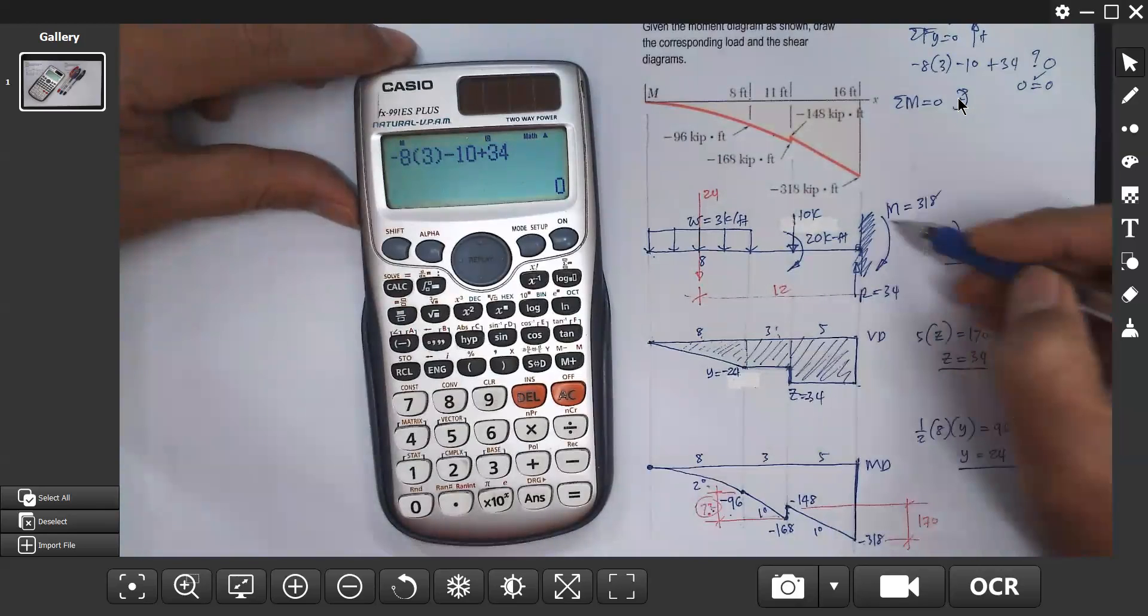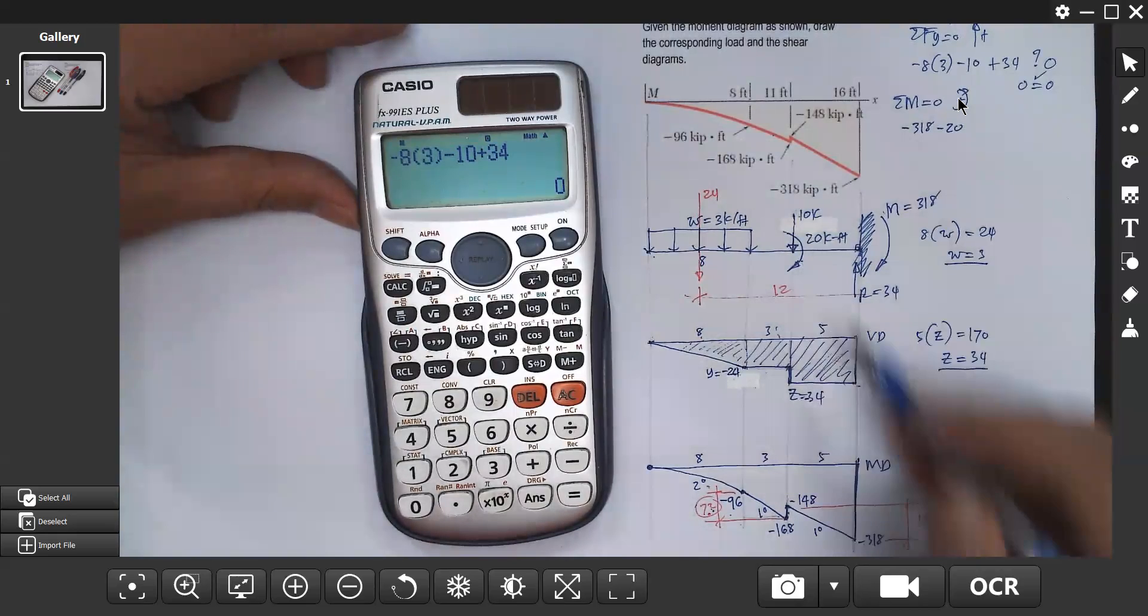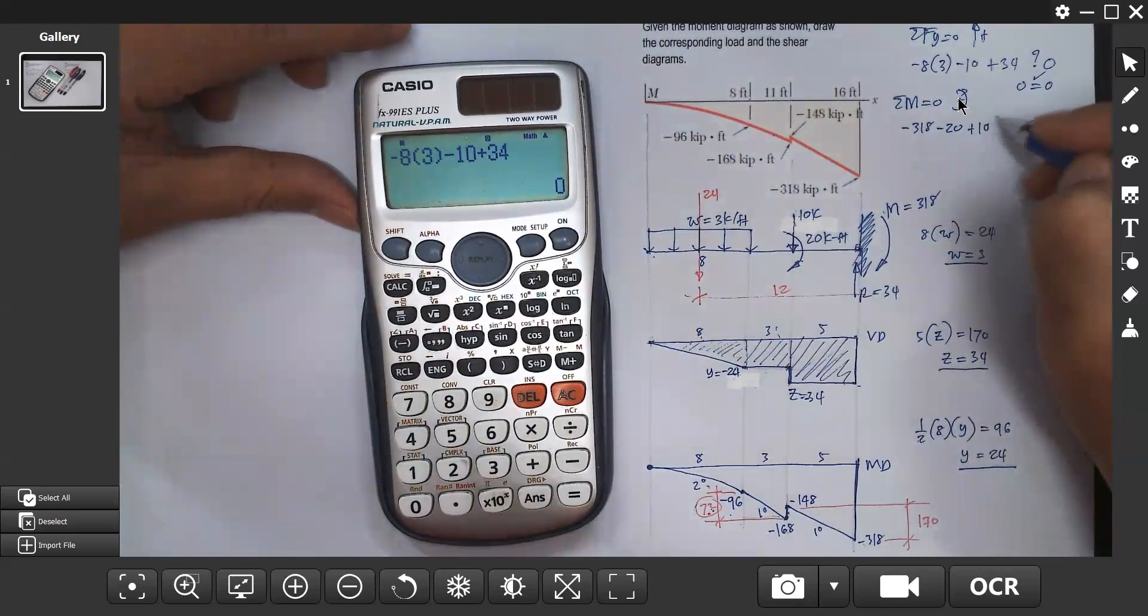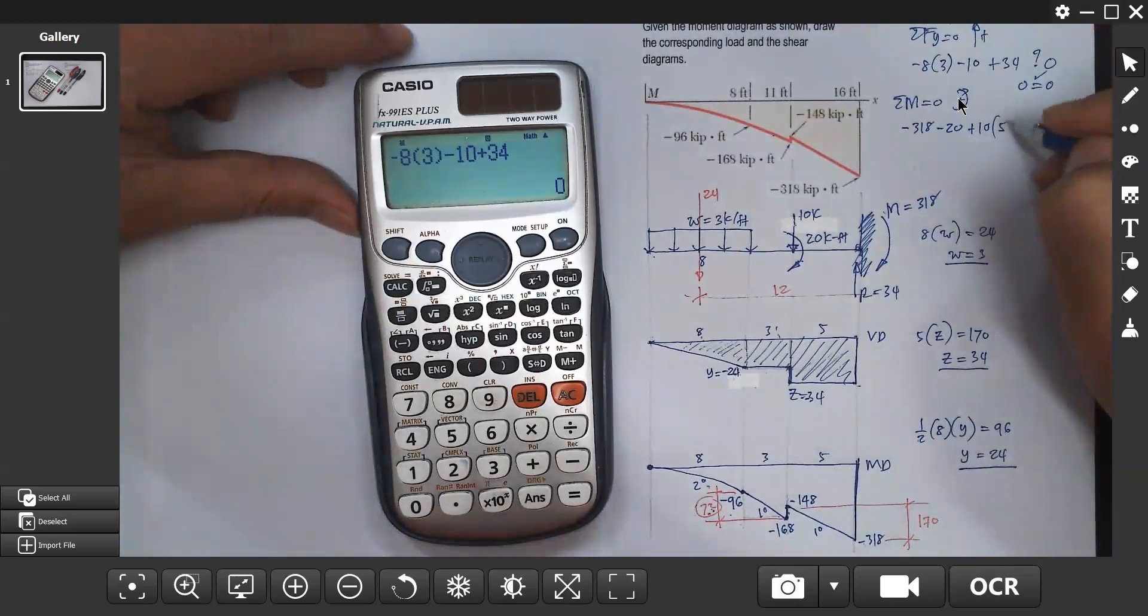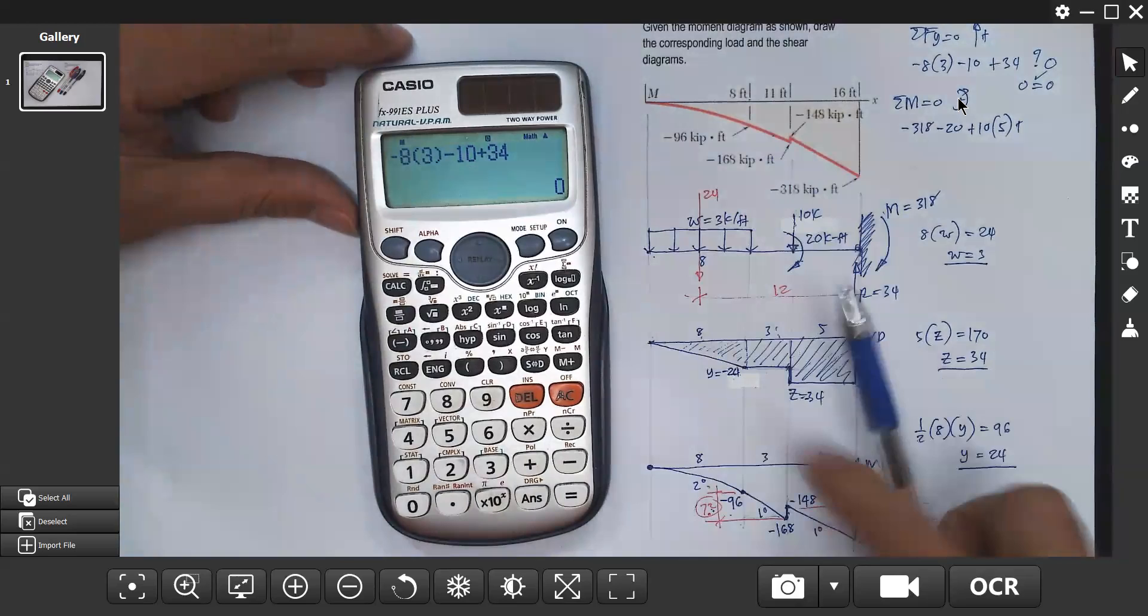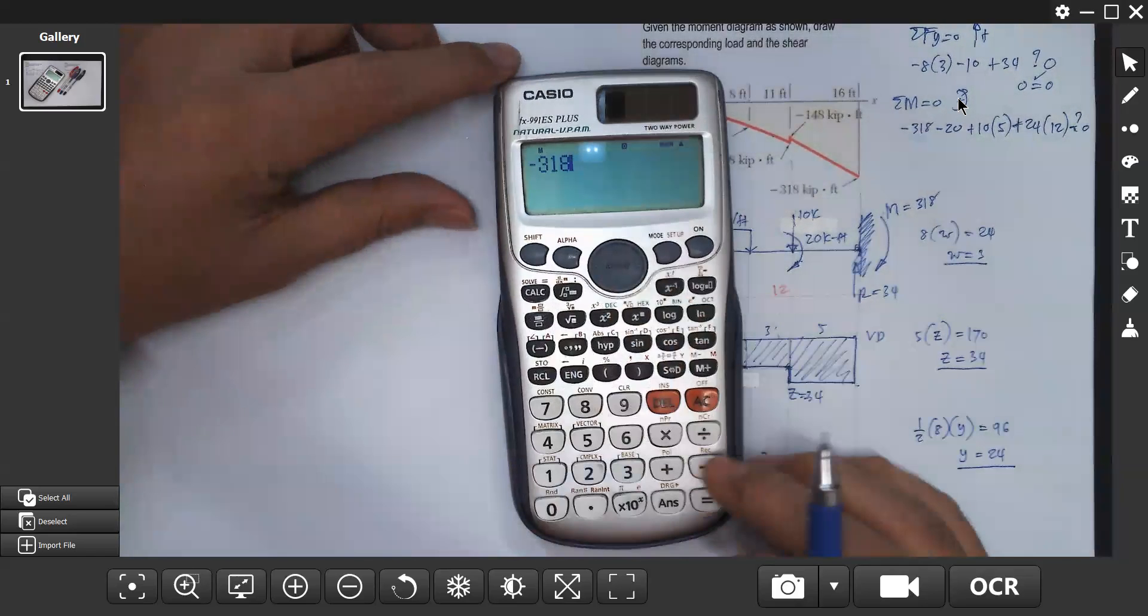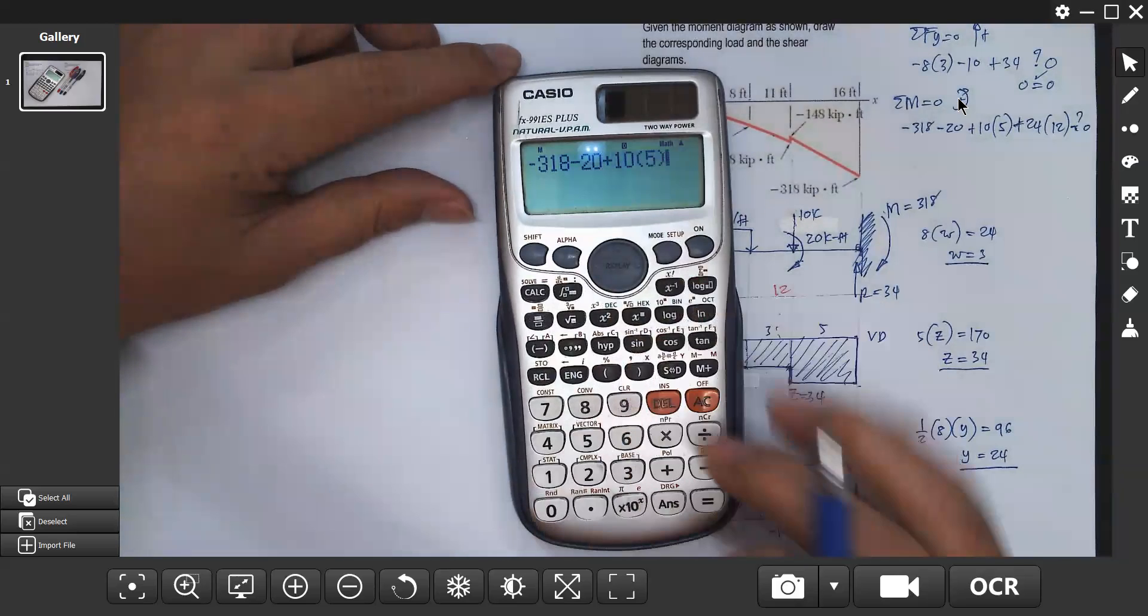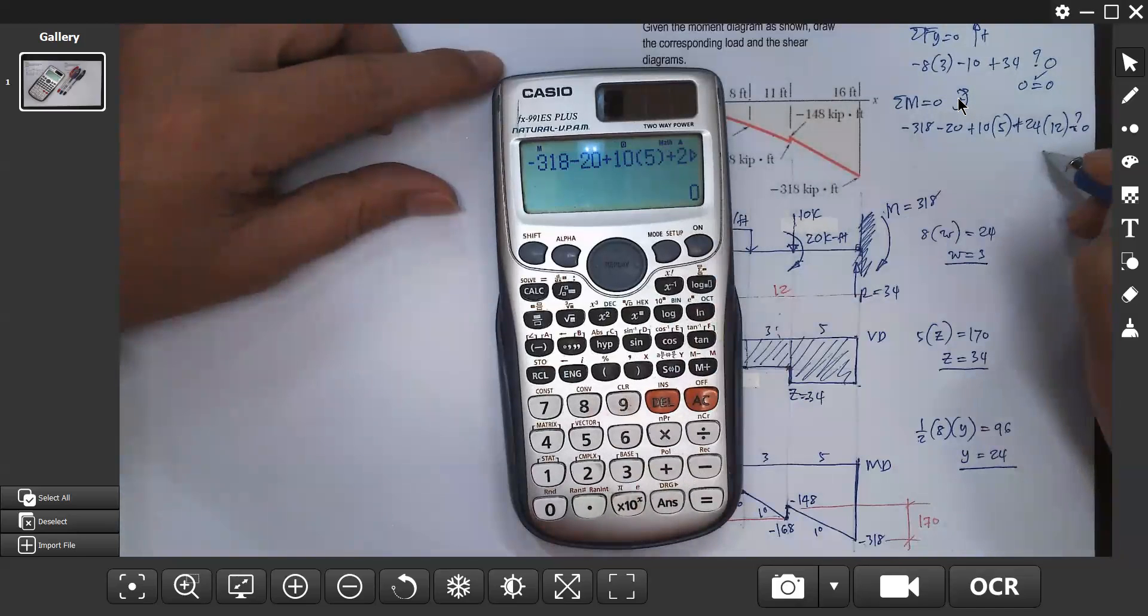Summation of moment equals zero. Negative 318 is clockwise, so negative. 20 is clockwise, so negative. Distance of 10 to the support is 5, so plus 10 times 5. Plus 24 times 12. Let's check if this equals zero. Negative 318 minus 20 plus 50 plus 288 equals zero. Check.